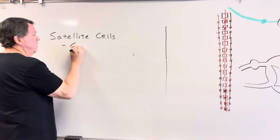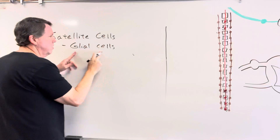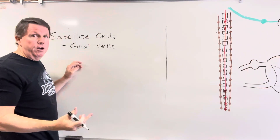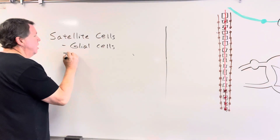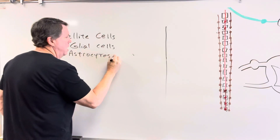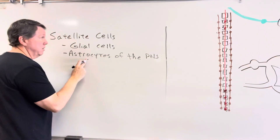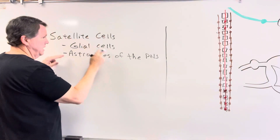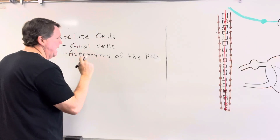These are a type of glial cell. Glial cells got their name because when all these non-neuron cell types in the nervous system were found, researchers thought they just provided support. Satellite cells are also known as the astrocytes of the PNS. Remember, actual astrocytes are found in the CNS, while satellite cells are found in the PNS, but they have a similar function to astrocytes.